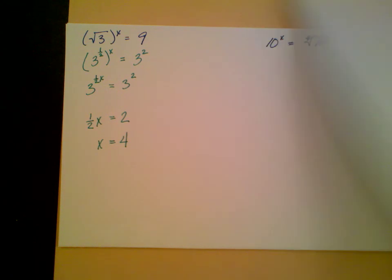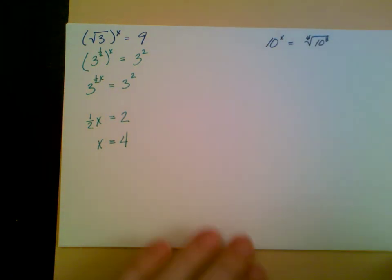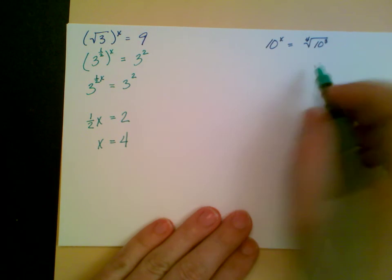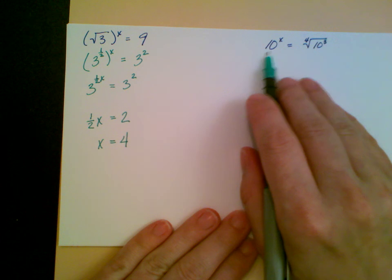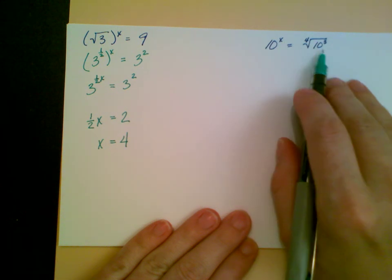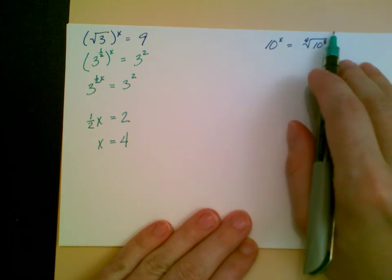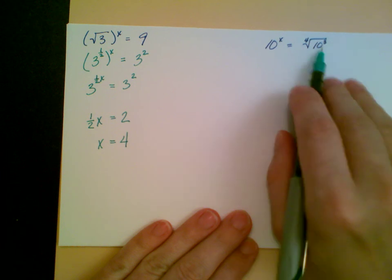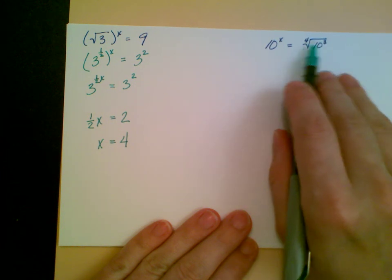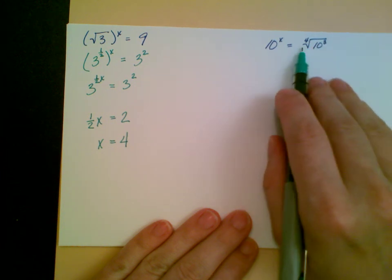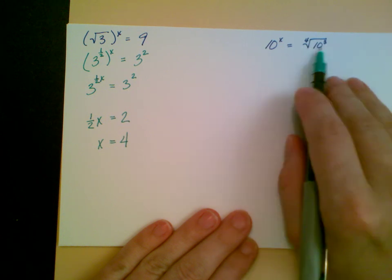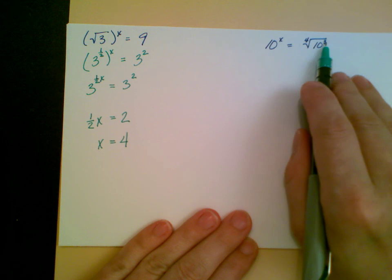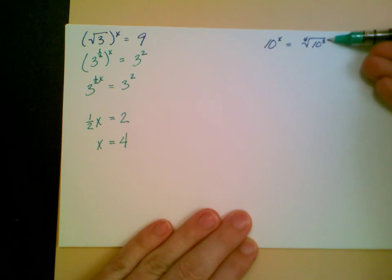Finally, my last example. I need to write this side, this is fine with my 10 to the x, I need to write this as 10 to the something. We're going to use that rule about our roots being related to fractional exponents. This 10 does have an exponent to it, so this will be the numerator of my fraction, this 3.